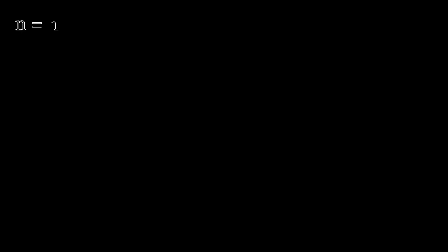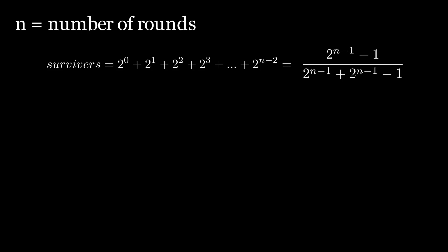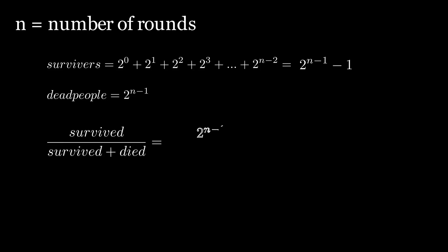Now to generalize, if n is the number of rounds, then survivors will be a series sum, and dead people will be 2 raised to n-1. We will take the limit, and as you can see, only 50% of people survive.